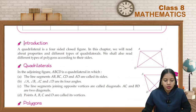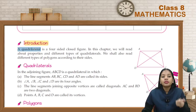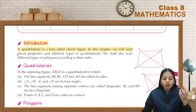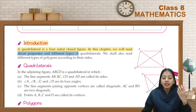So let's start with the introduction. Quadrilateral — what is it? A four-sided closed figure. In this chapter, we have quadrilateral properties and different types of quadrilaterals.